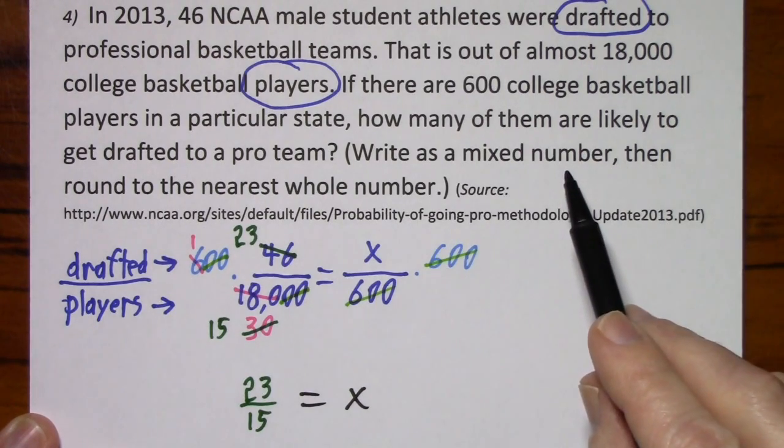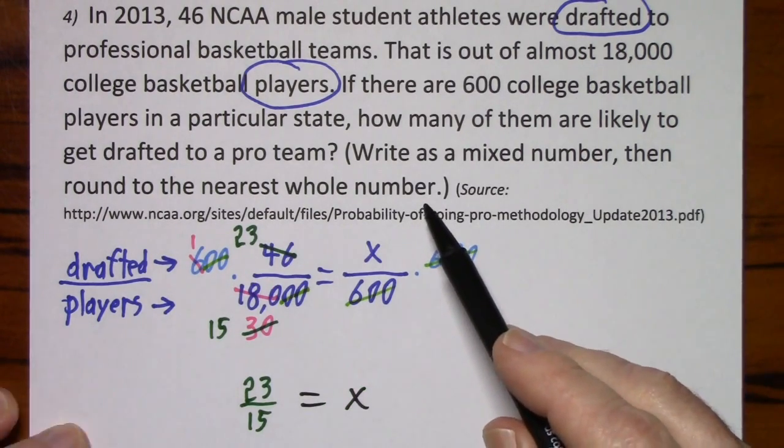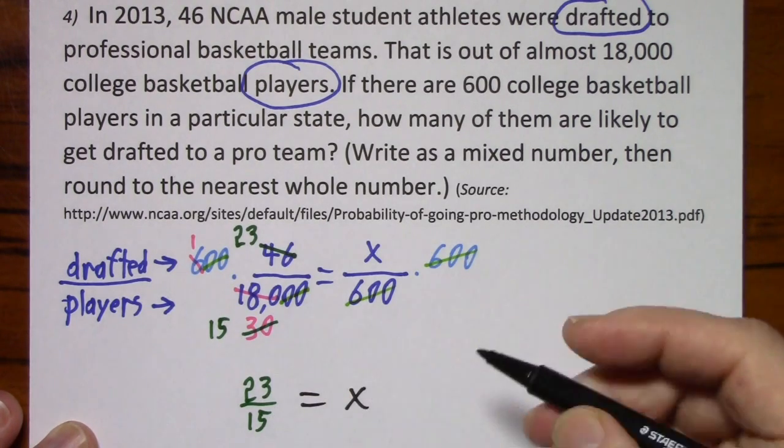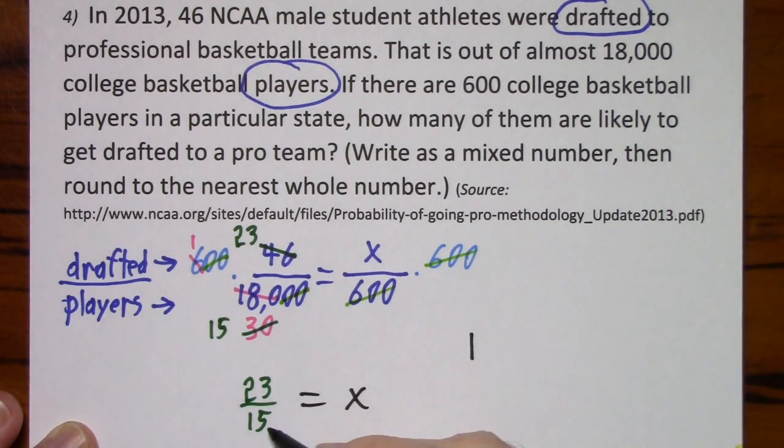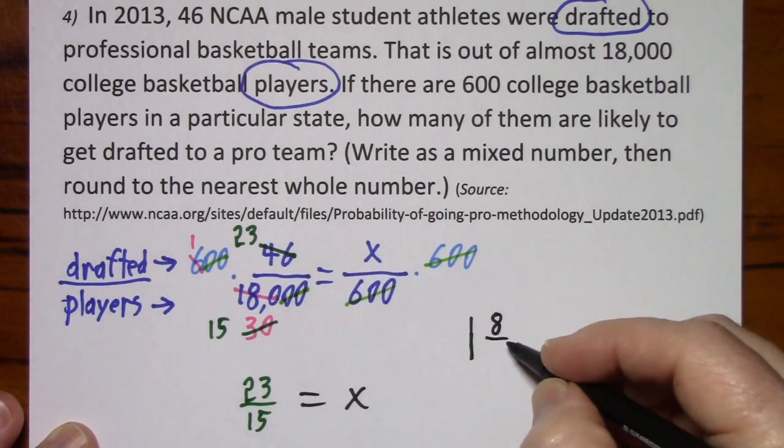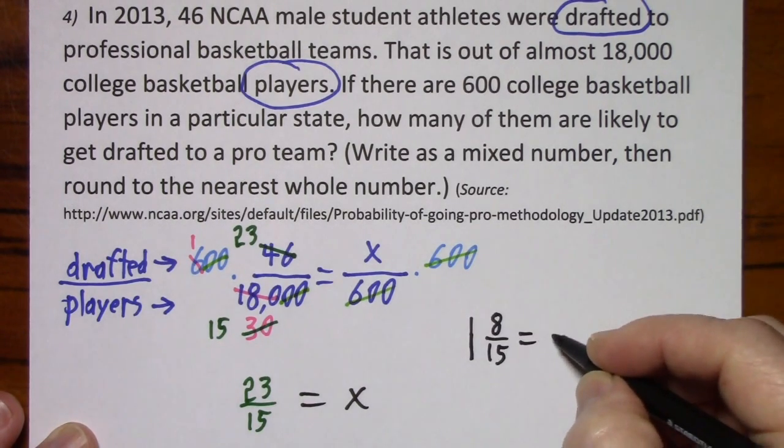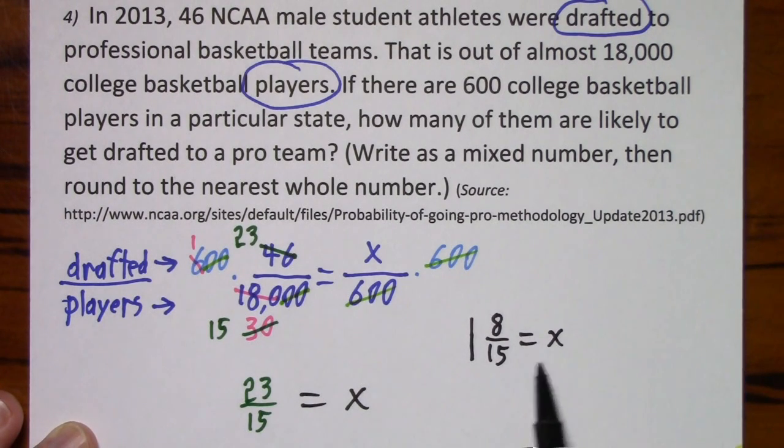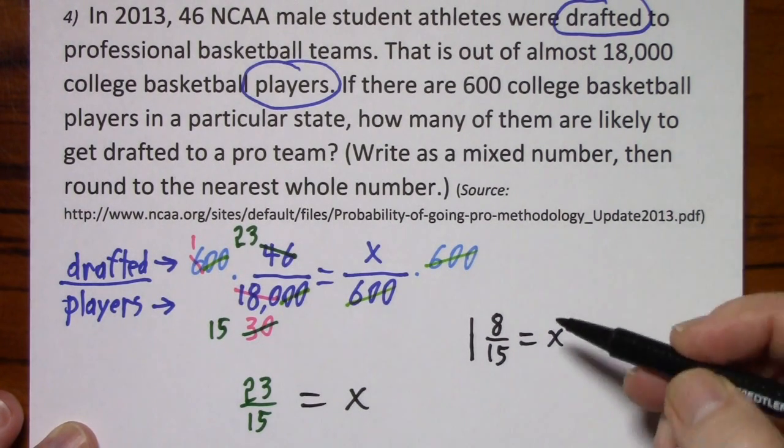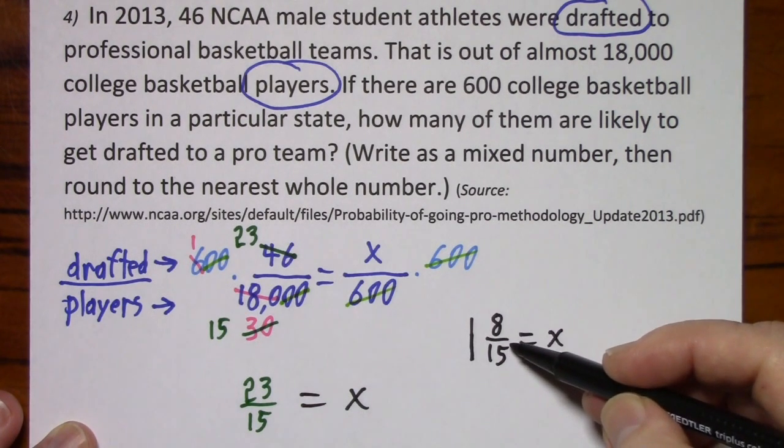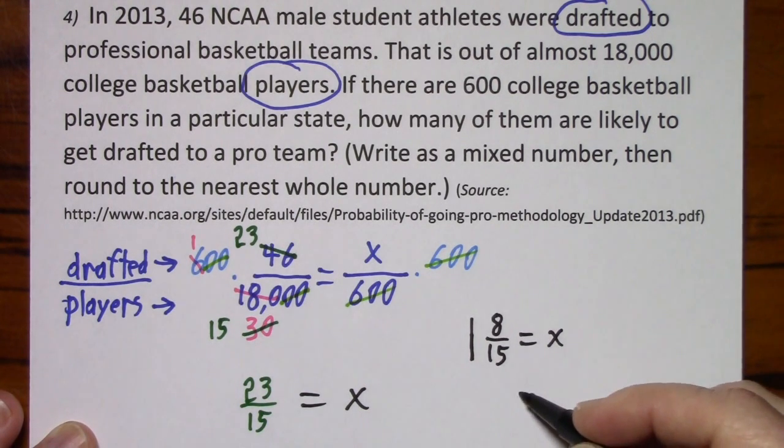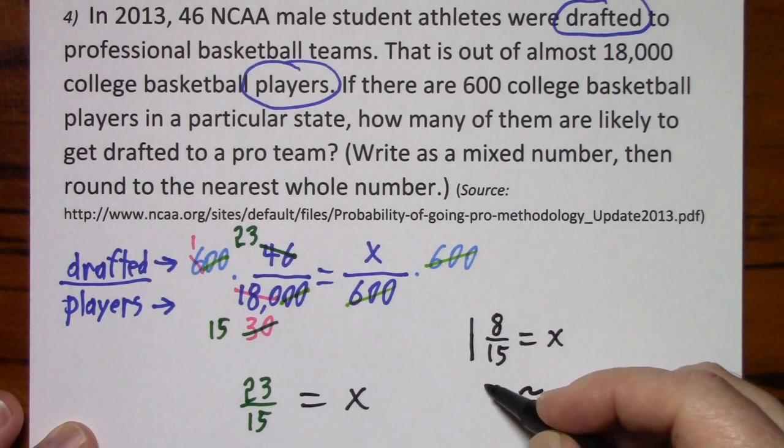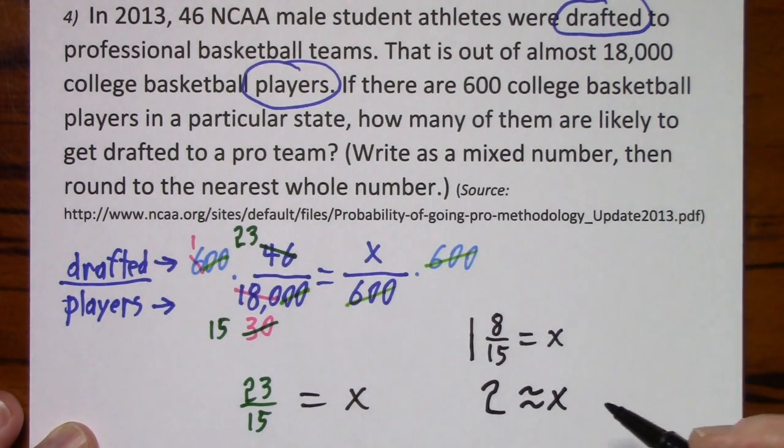They want us to write this as a mixed number and then round to the nearest whole number. So 15 goes into 23 one time with eight left over. So that's exactly what x is equal to, one and eight fifteenths. Eight fifteenths is a little bit more than one half. So x is approximately equal to 2, and that's how many are likely to be drafted.